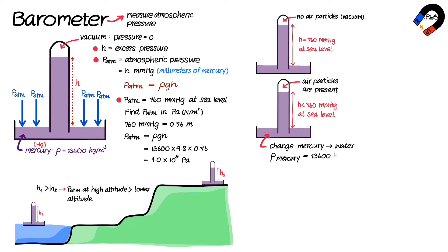Atmospheric pressure at sea level is 10⁵ pascals, which causes the mercury column in the barometer to have a height of 760 millimeters. We can find the height h in the tube if we use water instead of mercury at sea level,